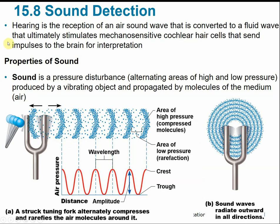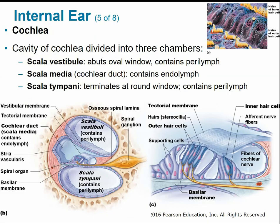Looking at sound detection: hearing is the reception of an air sound wave that's converted to a fluid wave in the inner ear, which stimulates the hair cells inside the cochlea and sends impulses to the brain. Sound is any type of pressure disturbance — alternating areas of high and low pressure produced by a vibrating object and propagated through air. When the eardrum receives sound and vibrates, it transmits that energy through fluid, which triggers the hair cells.